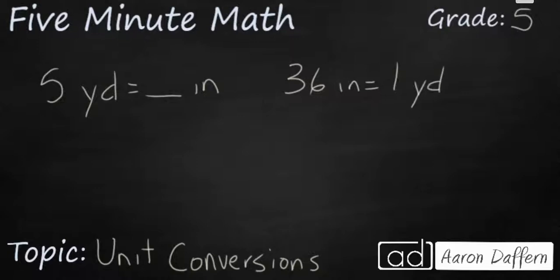And the second thing you need to know is whether you're going from a larger unit to a smaller unit or from a smaller unit to a larger unit. In this case our yards are larger because one yard makes 36 inches. So you are going from larger to smaller and that's going to make a difference.